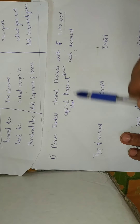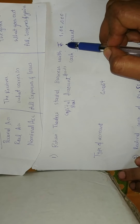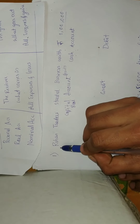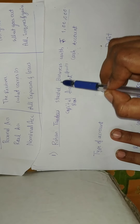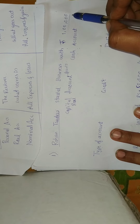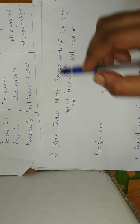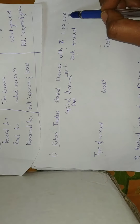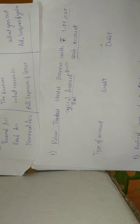This is the first problem in my exercise: Rohan Traders started business with rupees one lakh. Rohan is a person who has started a business called Rohan Traders, with a cash investment of one lakh rupees. In this transaction, two accounts come in: first is the cash account, because the business started with one lakh rupees in cash. The second is the capital account — the amount invested in the business is called the capital account.